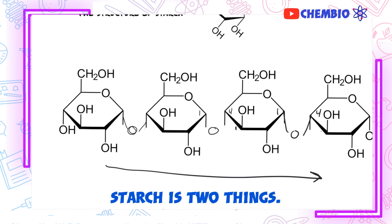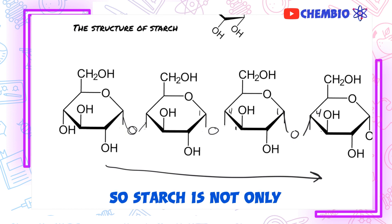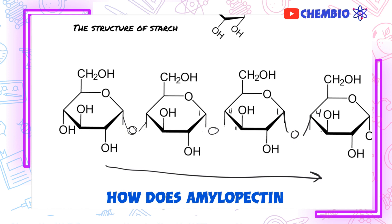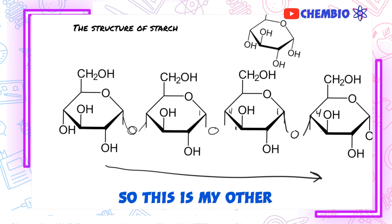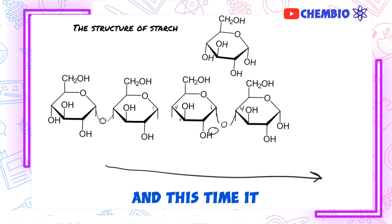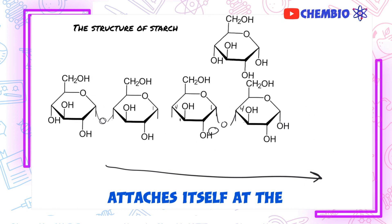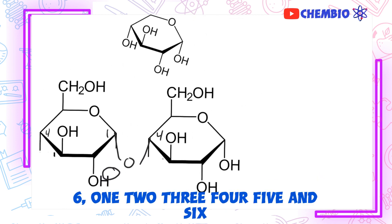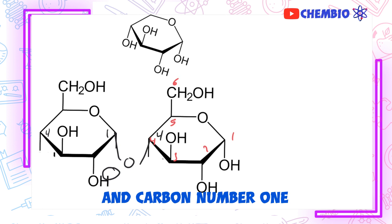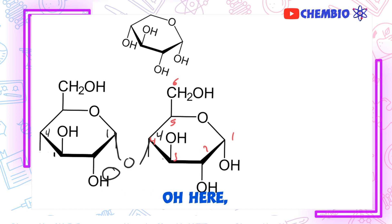Remember, starch is two things — not only amylose but also amylopectin. How does amylopectin form? In amylopectin, another glucose comes along, and this time it attaches itself at the position of the 6th carbon. Carbon number 6 is here: 1, 2, 3, 4, 5, 6. Carbon number 1 from this glucose — the OH here and the OH here — those condense and form a glycosidic bond.